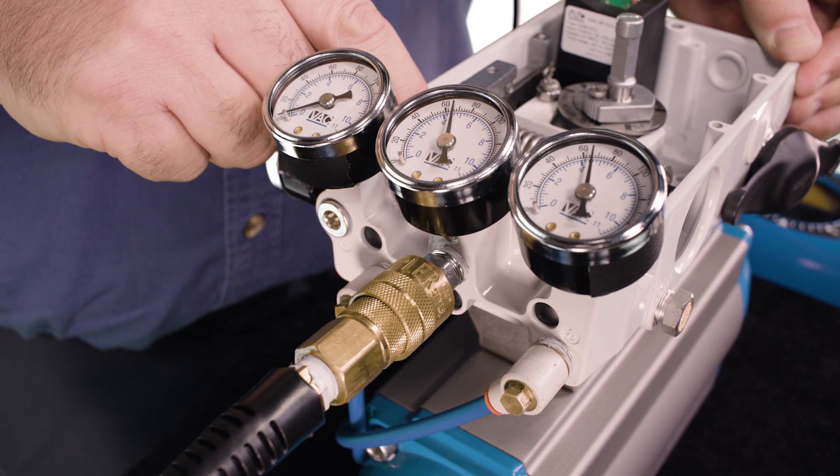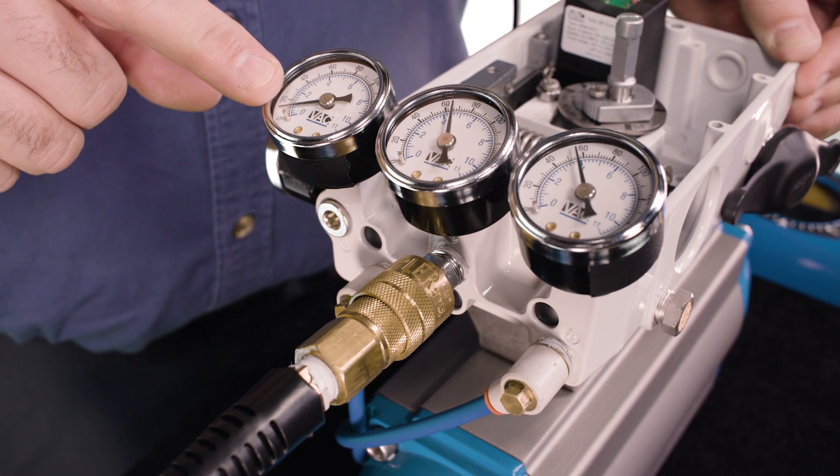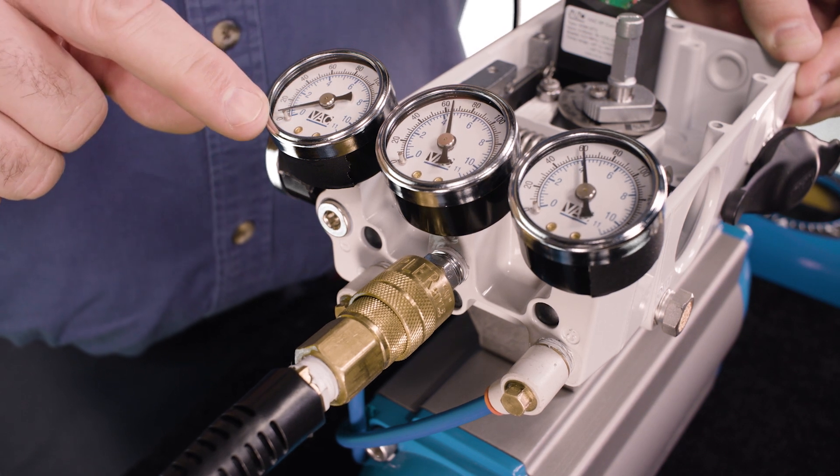You can move the balance arm toward the positioner housing to bump the positioner. Watch the C plus gauge needle. It should take three to five seconds to reach zero psi.